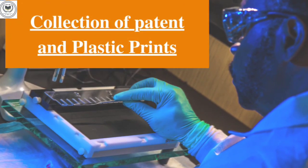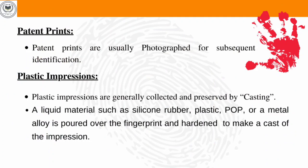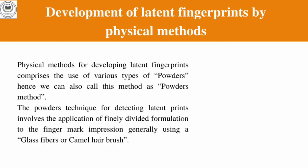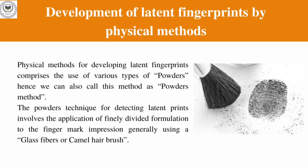Collection of patent and plastic prints: patent prints are usually photographed for subsequent identification. Plastic impressions are generally collected and preserved by casting — a liquid material such as silicone rubber, plaster of Paris, or a metal alloy is poured over the fingerprint and hardened to make a cast of the impression. The cast is more durable than the original plastic print and is stored as evidence.